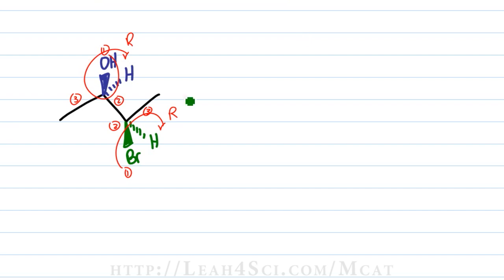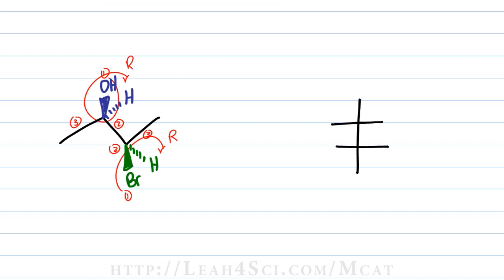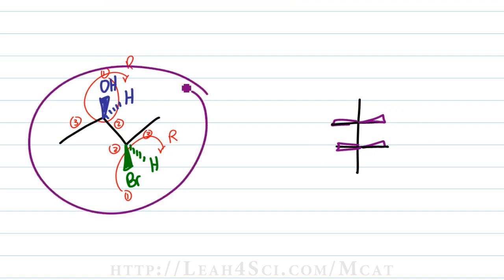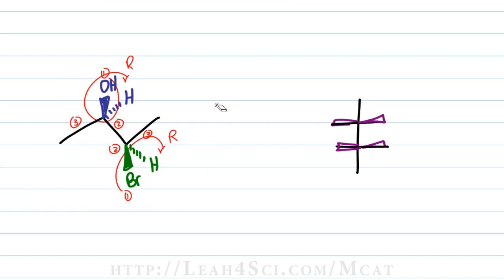The first and critical step is a rotation, because you want your sawhorse to represent the Fischer in a sideways view. Recall that a Fischer projection has horizontal lines representing substituents that are coming out of the page, and if we have more than one chiral center, that means we have more than one set of substituents facing in the same direction. In this case both sets of substituents are coming forward and out of the page, but in the three-dimensional molecule we have the blue set going up and the green set going down, facing in opposite directions.